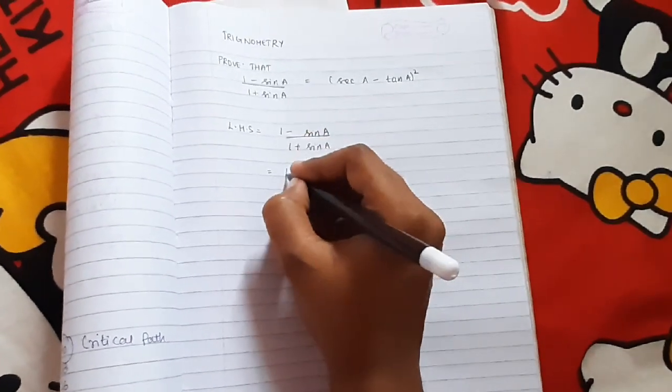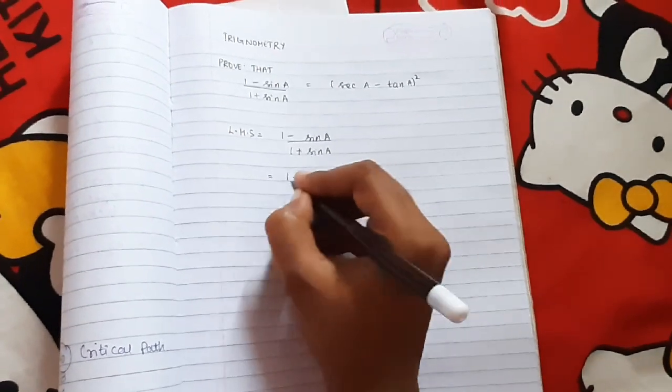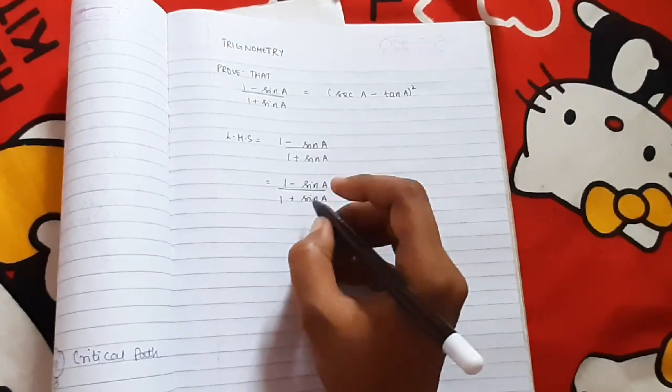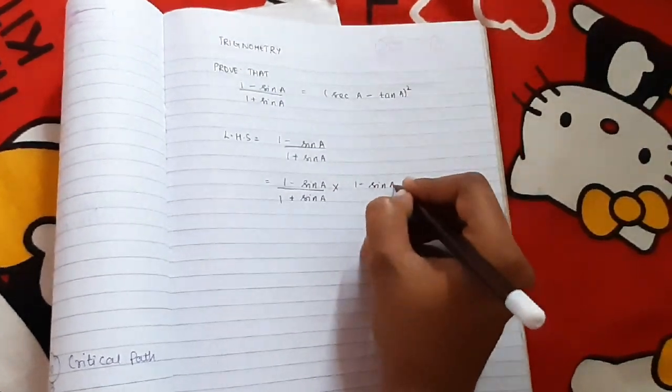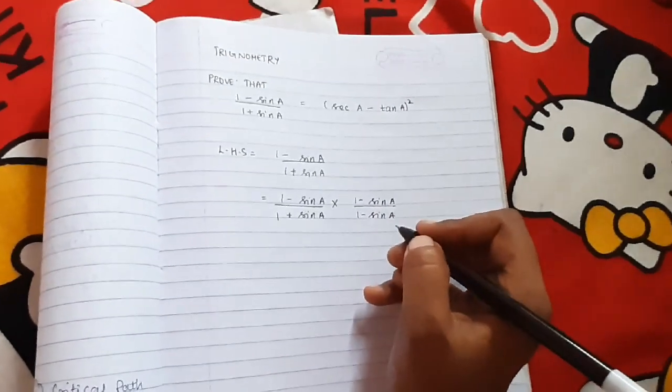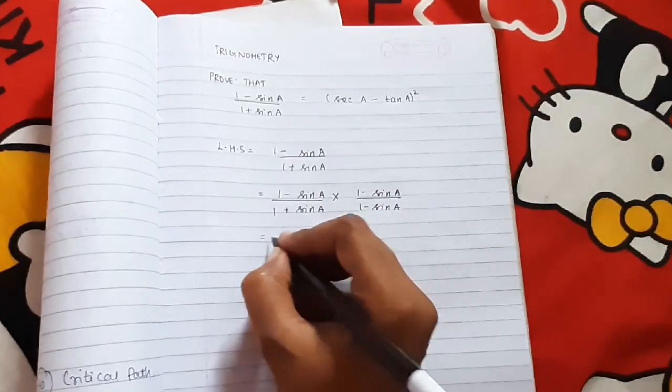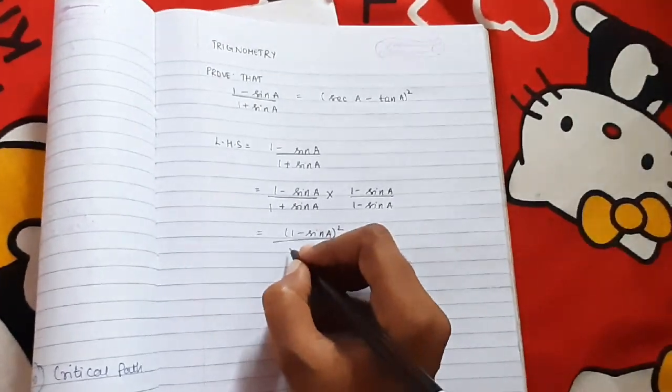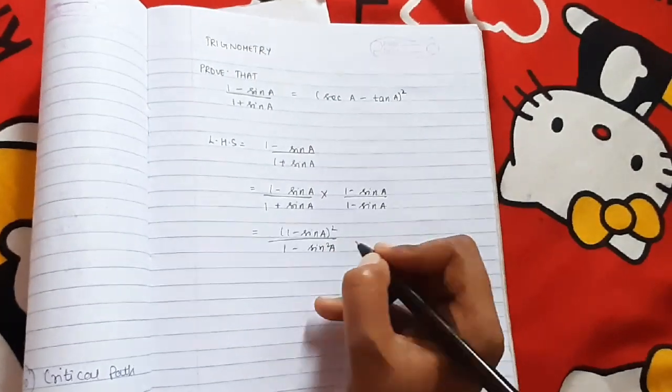We have to multiply both the numerator and denominator with a minus sign in between. So it will be (1 - sin A) whole square, and it will be 1 - sin² A.